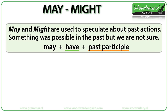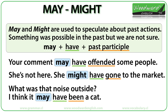May and might are used to speculate about past actions — here we are saying that something was possible in the past but we are not sure. For this we use may or might plus have plus the past participle. For example: 'Your comment may have offended some people — we are not sure.' 'She is not here — she might have gone to the market, it is possible but we are not sure.' 'What was that noise outside? I think it may have been a cat.' In all of these cases it was possible but we are not sure.